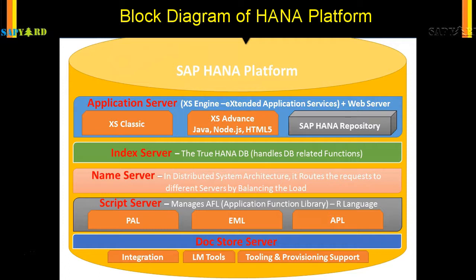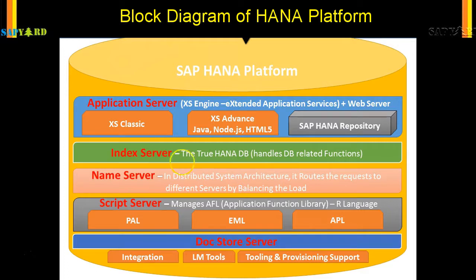So these are the different elements and layers within the HANA database. It is not just a database — it has many servers performing different functions. The XS (Application) Server is very important for building native HANA applications. The Index Server is the true HANA database server. The Name Server provides scalability through load balancing, the Script Server manages libraries and algorithms, and there is also the integration layer, LM tooling, and Doc Store Server.